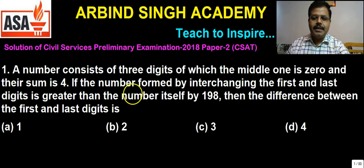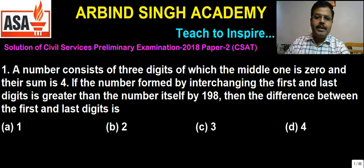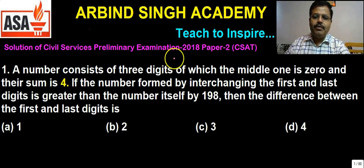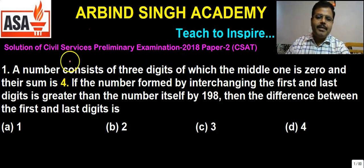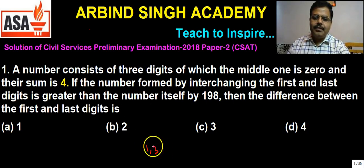For example, if the sum of the two digits is 4 and we take both digits as 2, the number would be 202. After interchanging the digits it won't be a different number. So since the sum of digits is 4, the digits must be 1 and 3, and therefore the difference of the digits must be equal to 2.